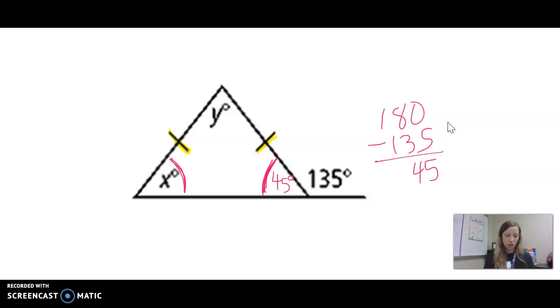Now we also noted that this is an isosceles triangle, so x is also 45 degrees. We know x already is 45.